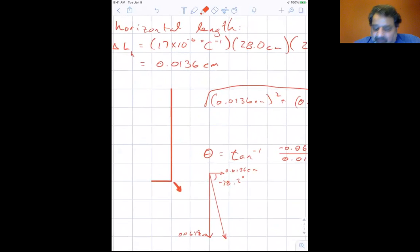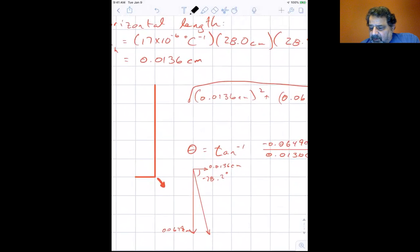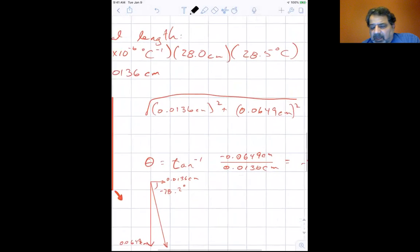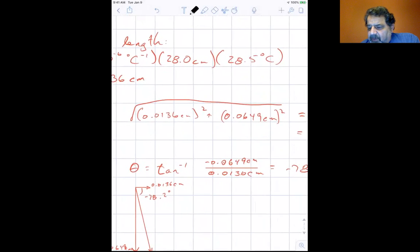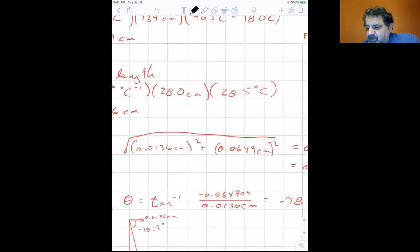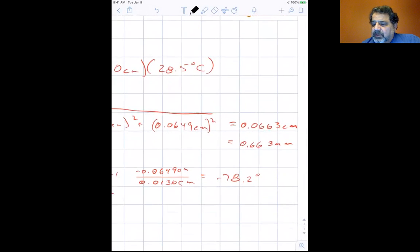So we need to find the magnitude and the direction of the displacement. Well, the displacement is this arrow here. Let me change colors just so you can tell what I'm doing. This arrow here is not telling you to look below, that's the displacement. It's just kind of a rough sketch of the displacement. You'll see that it's got a sharper angle than I've indicated initially. So how do we get the magnitude of an X and a Y? Well, we take the square root of the sum of the squares. So it's 0.0136 centimeters squared, and that's the horizontal, the X, and 0.0649 centimeters squared. And you get 0.0663 centimeters or 0.663 millimeters.